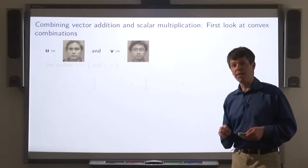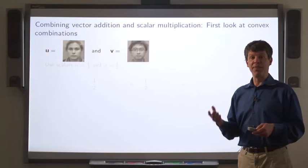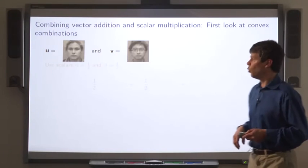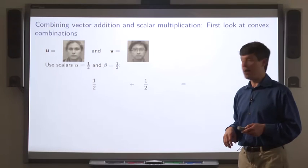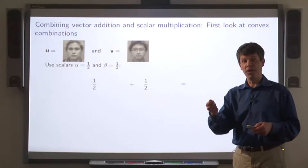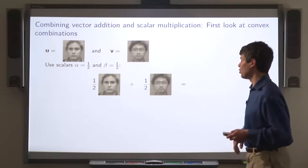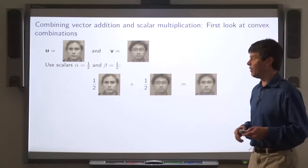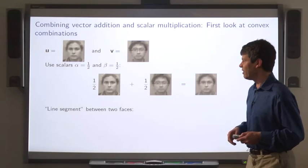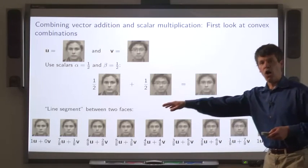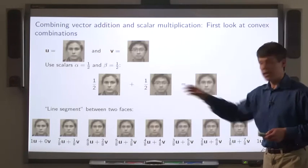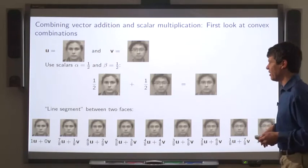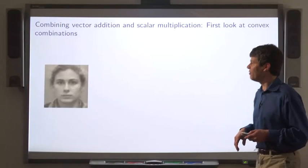We can use convex combinations on vectors that represent things other than points. Here we're going to take two vectors u and v that are representing images. One example of a convex combination assigns alpha 1 half and beta 1 half. This is just the average, and the average of two images is some mix of the two. Now we can also use the idea of a line segment between two faces. So here we're taking a whole bunch of different combinations of alpha and beta to represent a sort of line segment between faces. We can get a kind of crossfade effect in this way.